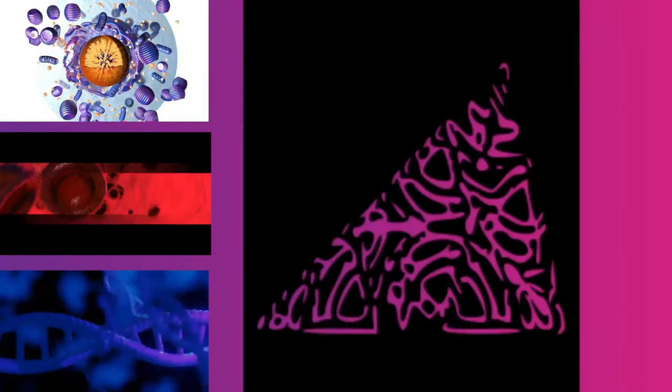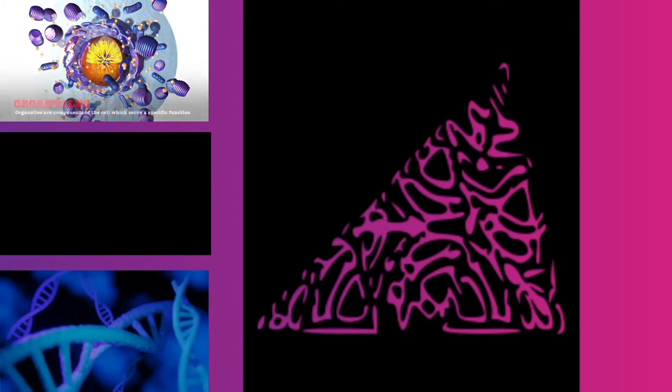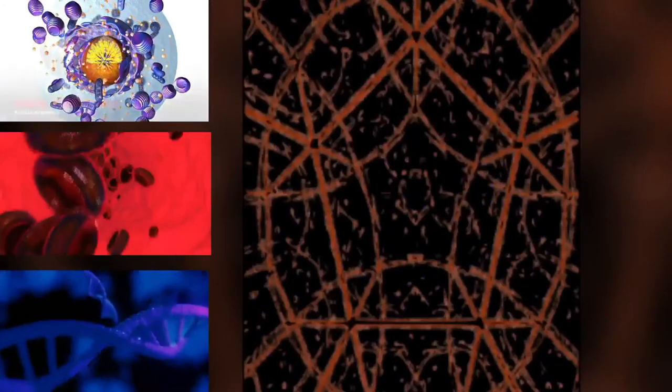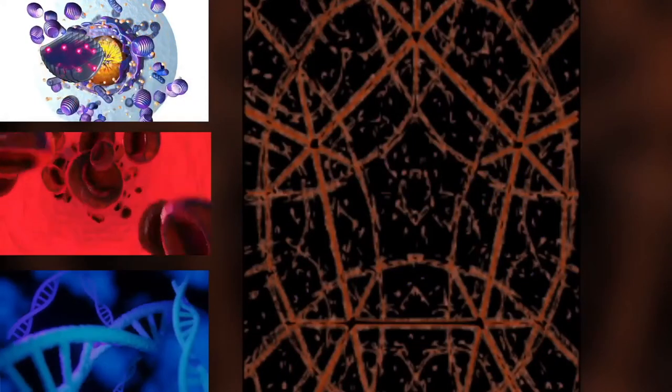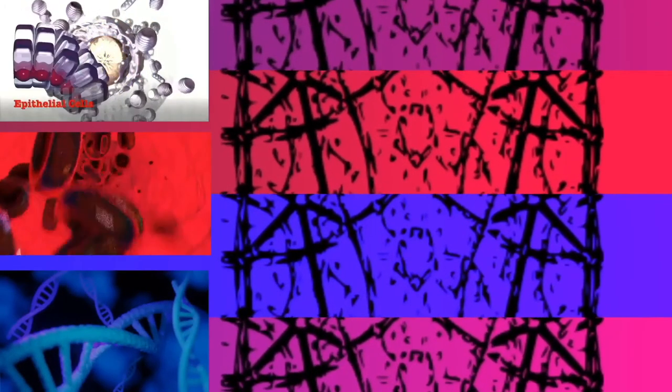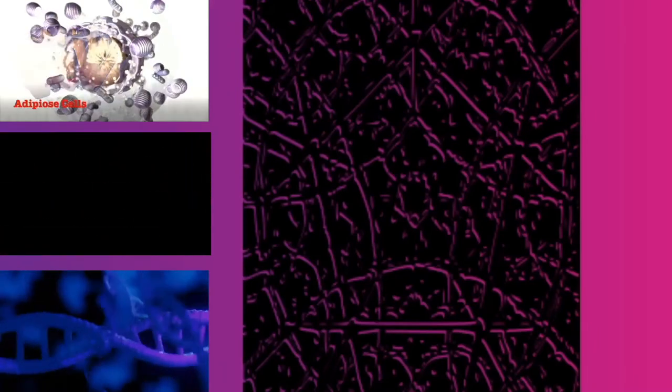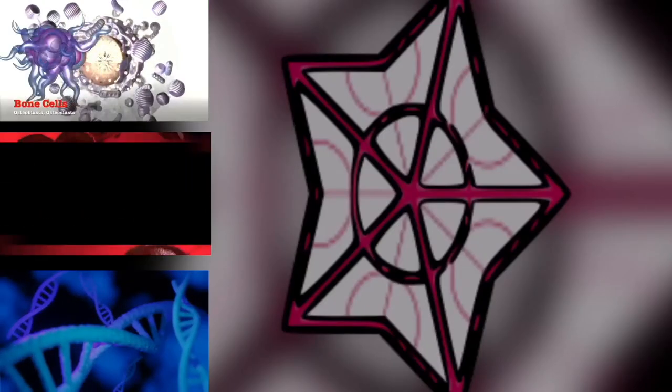Three main explanations for this have been proposed. Eukaryotes resulted from the complete fusion of two or more cells, wherein the cytoplasm formed from a bacterium and the nucleus from an archaeon, from a virus, or a pre-cell. Eukaryotes developed from Archaea and acquired their bacterial characteristics through the endosymbiosis of a protomitochondrion of bacterial origin. Eukaryotes and Archaea developed separately from a modified bacterium.